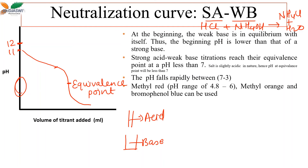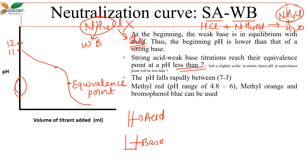Strong acid–weak base titrations reach their equivalence point at pH less than 7. Why? Because in the salt NH₄Cl, Cl⁻ comes from the strong acid and NH₄⁺ comes from the weak base. NH₄⁺ has a tendency to take up OH⁻ from water, reducing OH⁻ and leaving more H⁺ in solution. Therefore, the pH at the equivalence point is less than 7. The pH falls rapidly between 7 and 3.